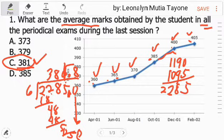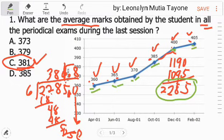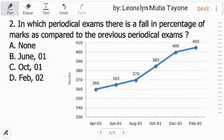For those who are confused, because some suggested that I should explain more slowly. Okay, I'll slow down. The question here is, what are the average marks obtained by the students in all the periodical exams during the last session? When it says all, that's all of them. When it says average, you add all of those and divide by how many they are. So this is all. That's why we added them. So the total of that is 2,285. We divided by how many? 1, 2, 3, 4, 5, 6. We divided by 6. The answer that we rounded off to a whole number is 381.